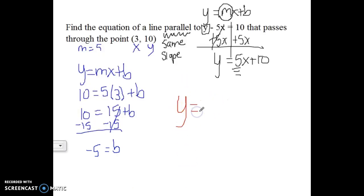So the b value is going to be negative 5. So to write my final equation in slope intercept form, it's going to be y equals 5x minus 5. I plugged in the m and I plugged in the b into my final equation. So that's how you would write the equation of a line parallel to the line given that passes through the given point.